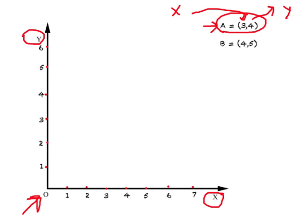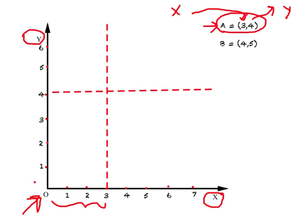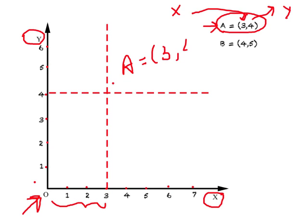To plot point A, we go three steps on the x-axis because x equals 3, and we draw a vertical line from there. Then, since y is 4, we go four spaces on the y-axis and draw a horizontal line from there. Wherever these two lines meet, you have point A at (3, 4). This is how we plot a point on a diagram like this one.